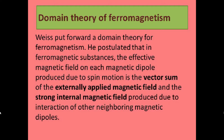So the effective magnetic field is produced due to spin motion. We have to take the vector sum of the externally applied magnetic field and the strong internal magnetic field produced due to interaction of other neighboring magnetic dipoles. These two together constitute the effective magnetic field on each magnetic dipole.